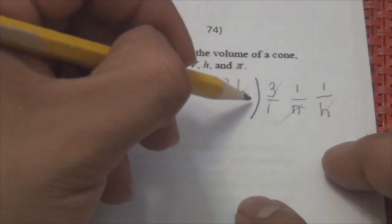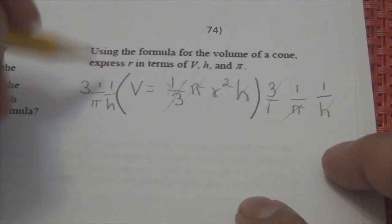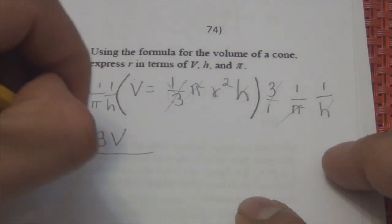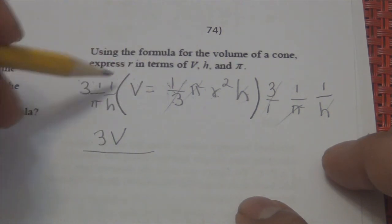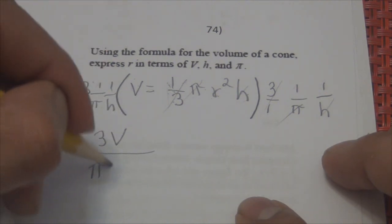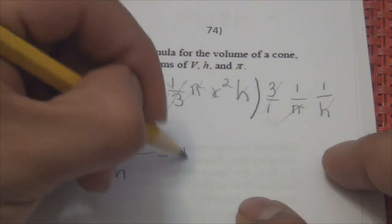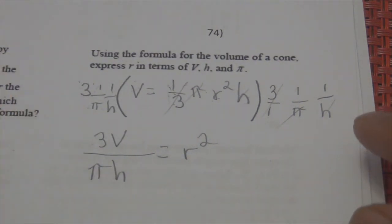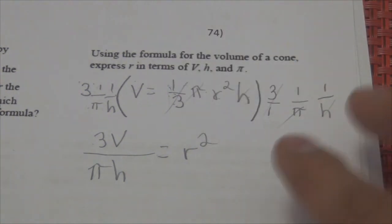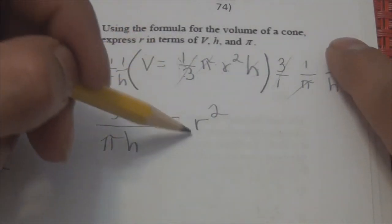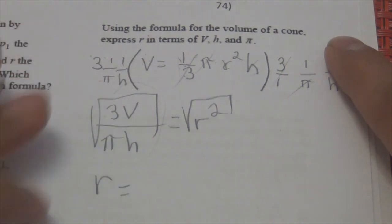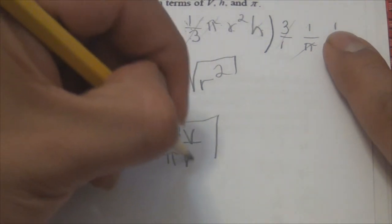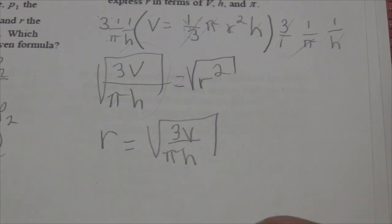On the left side, 3 times V over pi H gives 3V over pi H, which equals R squared. Take the square root of both sides to undo the square: R equals the square root of 3V over pi H. That's how you do it.